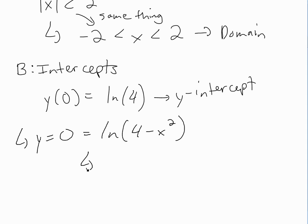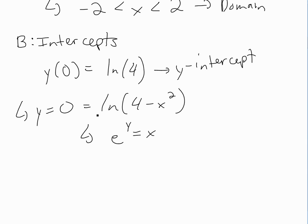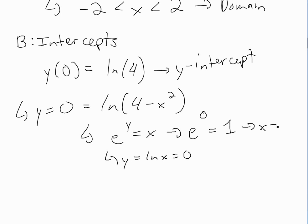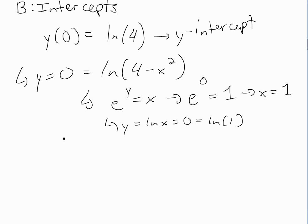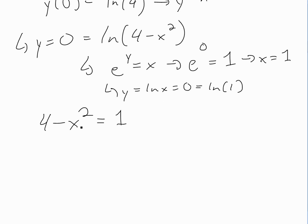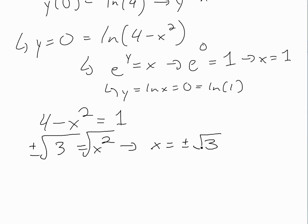To solve this, recall from the definition of the inverse: e to the y equals x for generic ln(x). The only way that y could be zero is if x is one, because e to the zero equals one. So we need 4 - x² to equal one. Rearranging: x² equals 3. Taking the square root of both sides gives x equals plus or minus root 3. These are our x-intercepts.